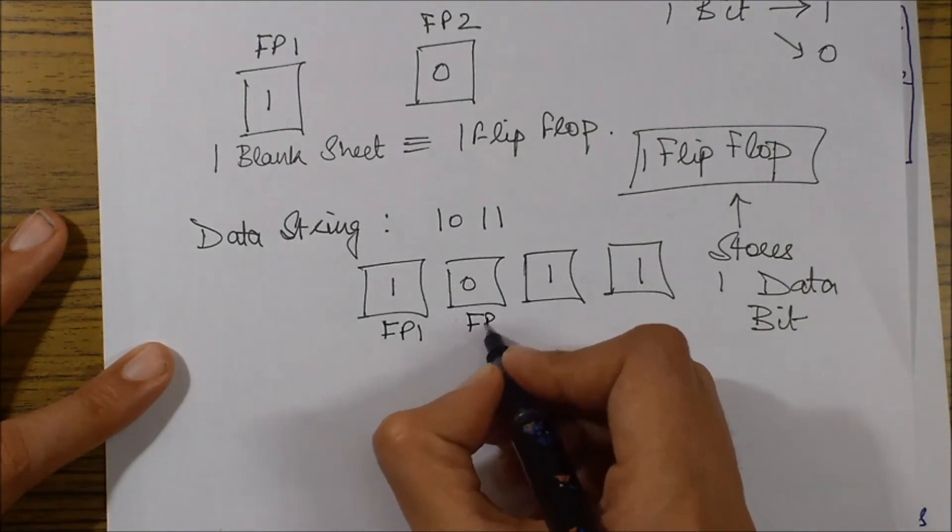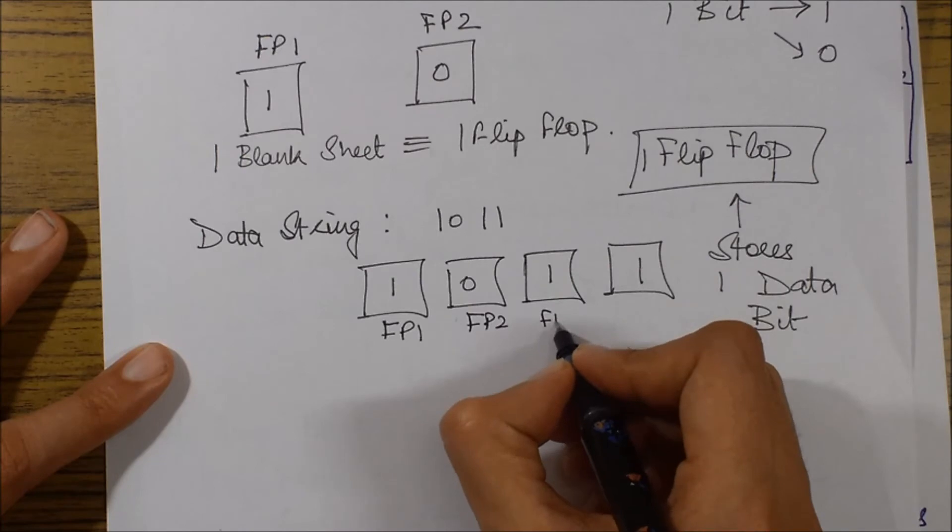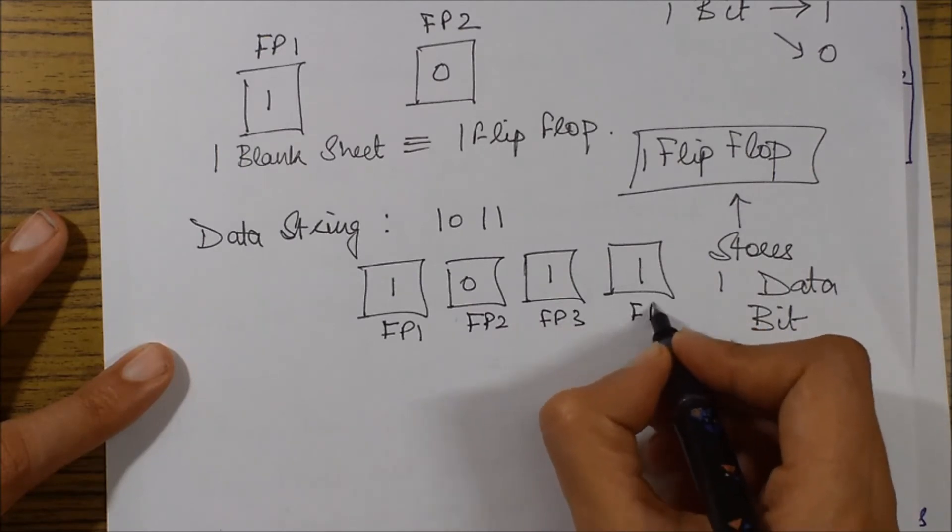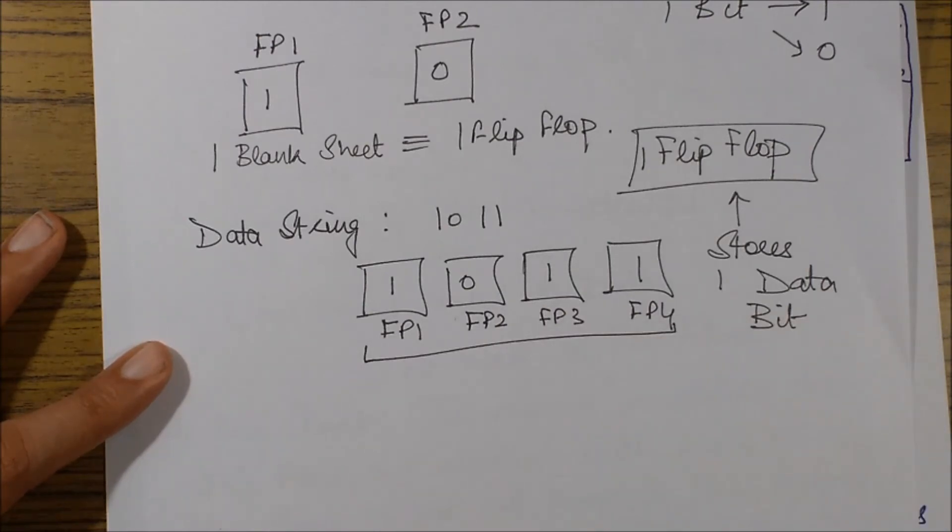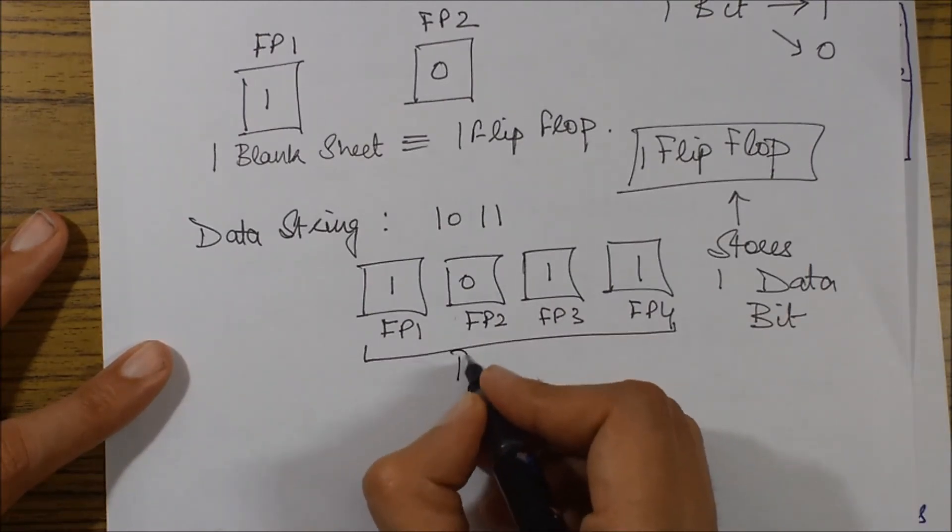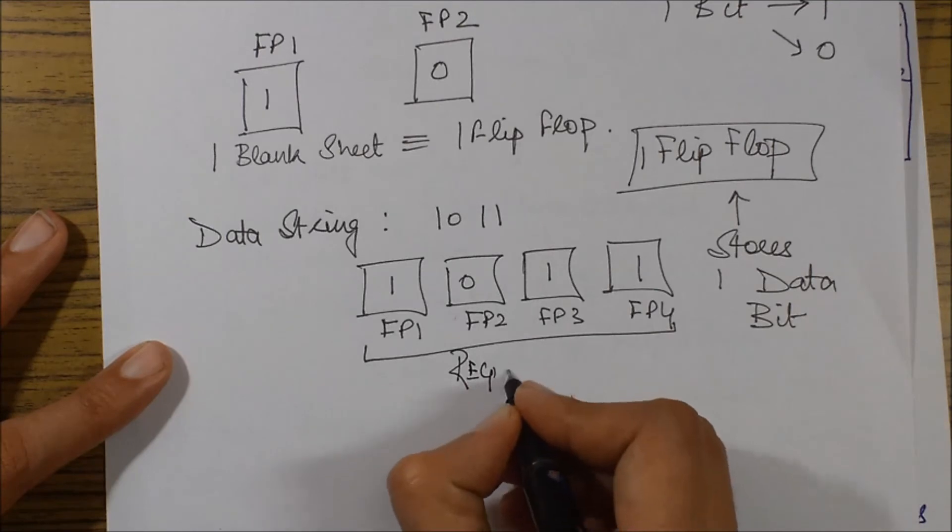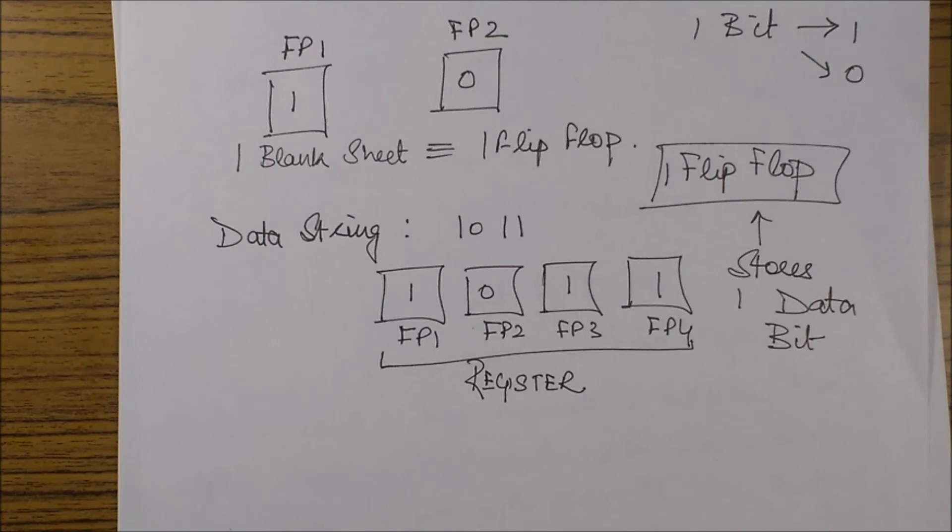This will be flip-flop one, this will be flip-flop two, FP3, FP4. And now what do we call this combination of flip-flops? We call this combination of flip-flops as a register. So this is a very simple method or analogy to learn the concept of a register.